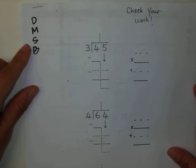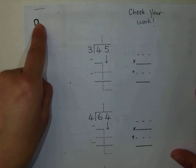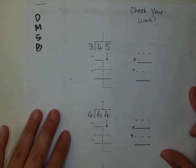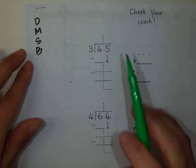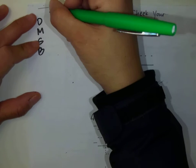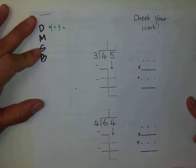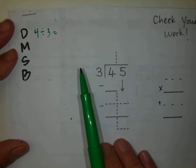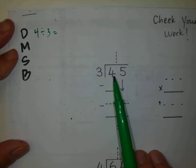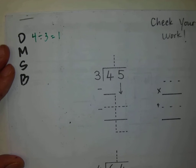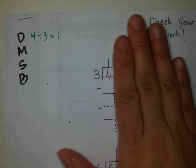The first step is going to be to divide. I'm going to break up these steps here on the left side, and I would like you to do the same because you have some extra writing space. With the first problem, what we're looking at is 4 divided by 3. I'm asking myself: how many groups of 3 can I make out of 4? Just 1 group, and there will be some left over. I'm going to write a 1 here, representing that 4 divided by 3 equals 1.